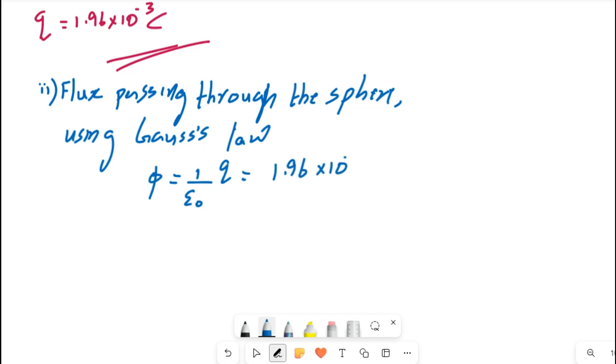So phi is equal to 1 by epsilon 0 times Q. Here Q is 1.96 into 10 raised to minus 3 divided by epsilon 0. The standard value, it will be given in the question paper first page. 8.85 into 10 raised to minus 12.